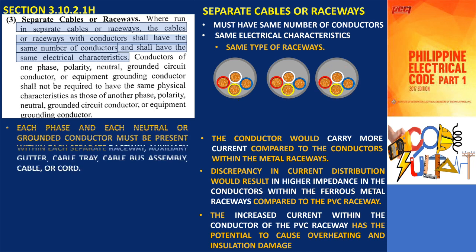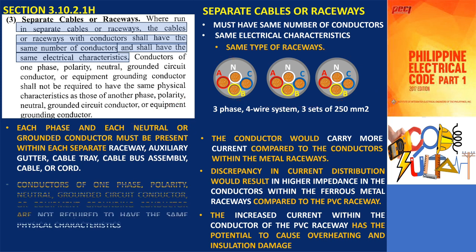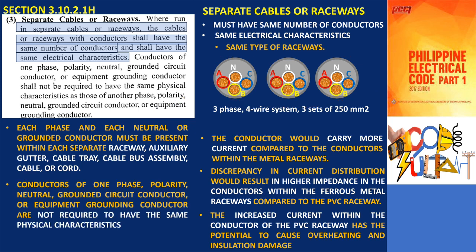Additionally, each phase and each neutral or grounded conductor must be present within each separate raceway, auxiliary gutter, cable tray, cable bus assembly, cable, or cord. In the illustration shown, a three-phase, four-wire system where three sets of 250 mm² conductors are paralleled for each phase and the neutral. There should be one 250 mm² conductor for phase A, one for phase B, one for phase C, and one for the neutral within each of the three raceways. This ensures proper distribution and balance of electrical current.